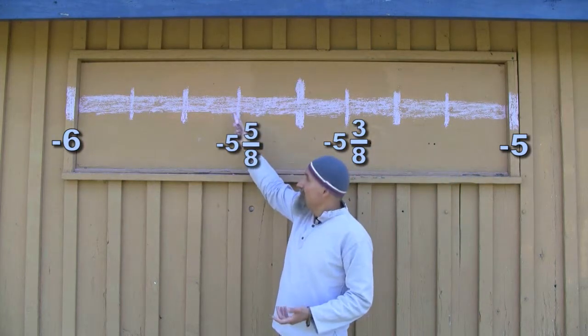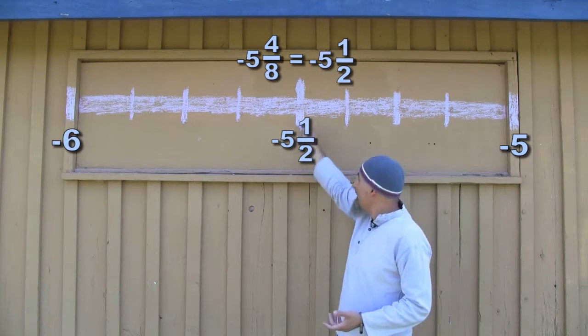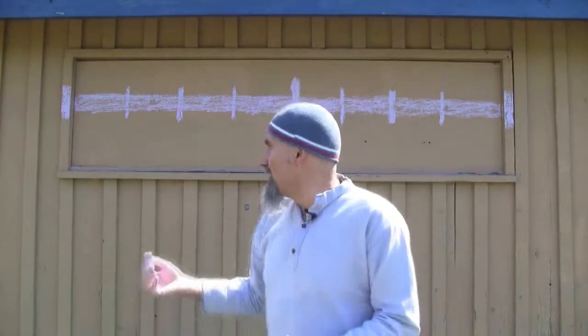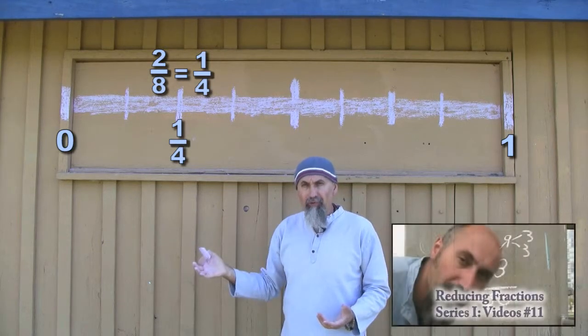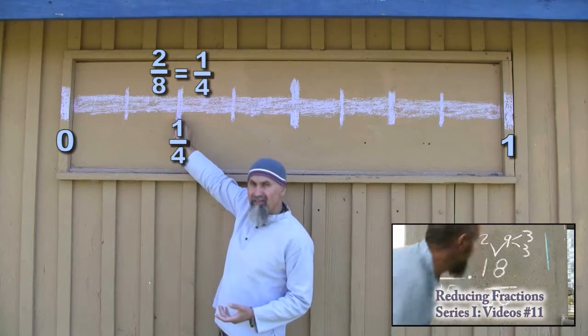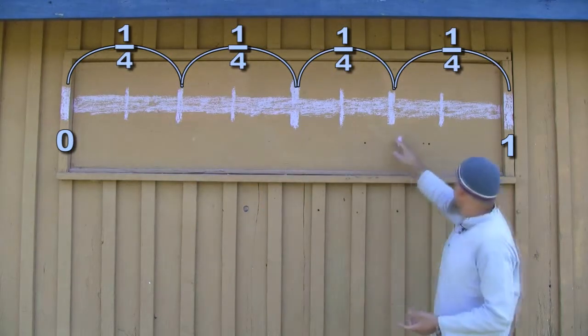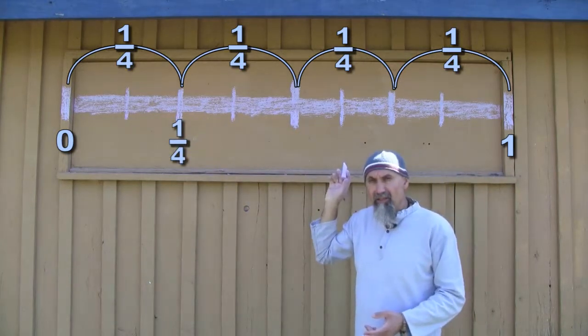Negative five and five-eighths, negative five and a half — because negative five and four-eighths: four over eight is a half, so you reduce it. If you go back from zero to one and you want two-eighths, two-eighths is just a quarter. That would be one out of four even pieces. That's basically how you deal with reducing fractions, and that's how you cut a line into even pieces.